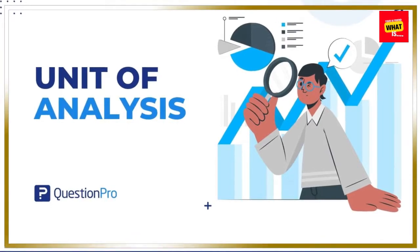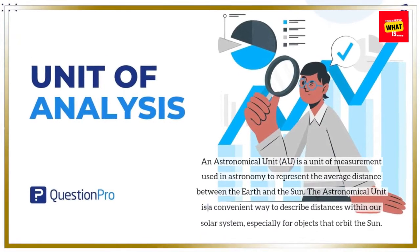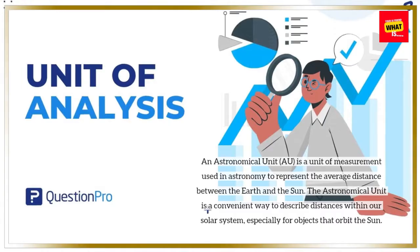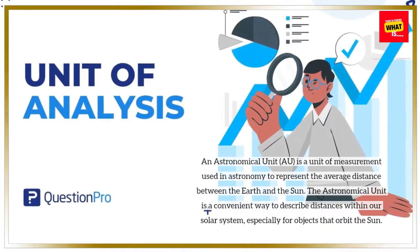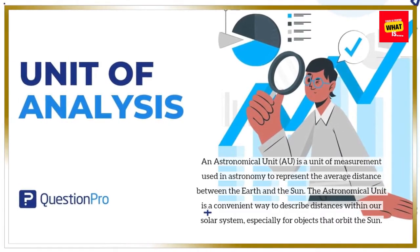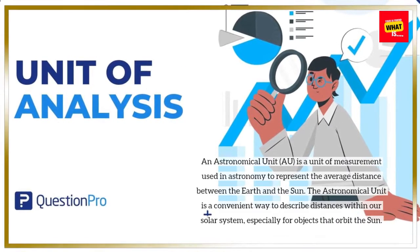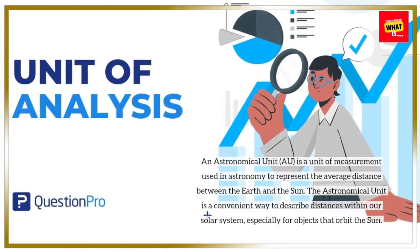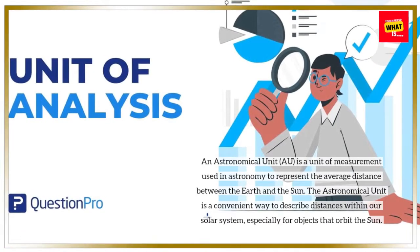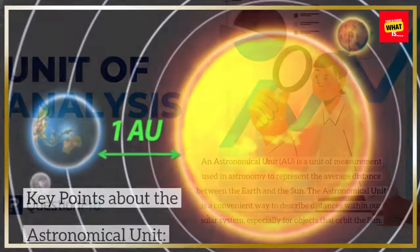An astronomical unit (AU) is a unit of measurement used in astronomy to represent the average distance between the Earth and the Sun. The astronomical unit is a convenient way to describe distances within our solar system, especially for objects that orbit the Sun.